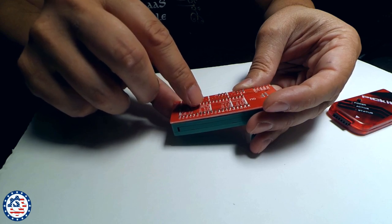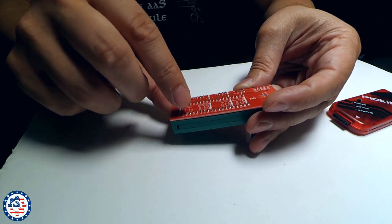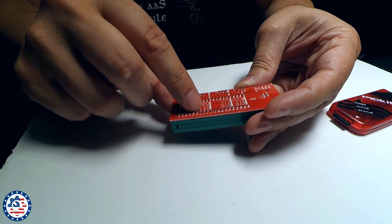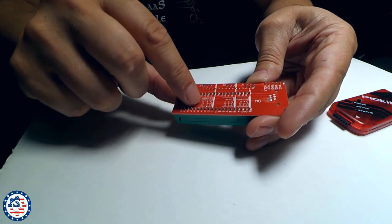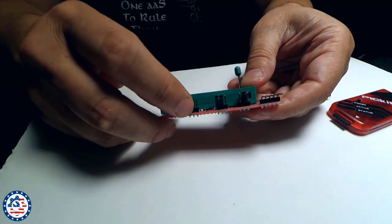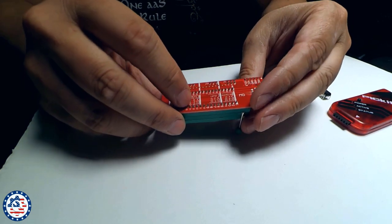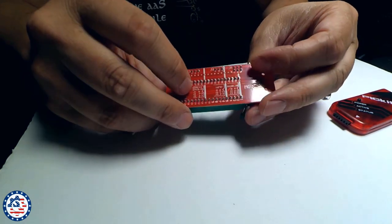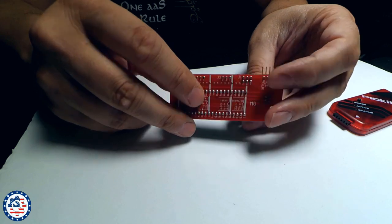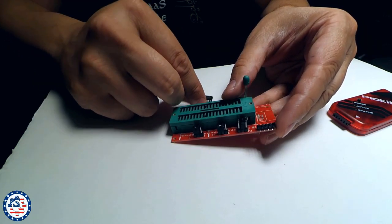So this is for DIP-8, 14, 18, 20. We're going to use the settings as it's mentioned here. I've got the jumpers already configured. I'm going to make sure that I put the chip in the right place and the notch is pointing in the right direction.